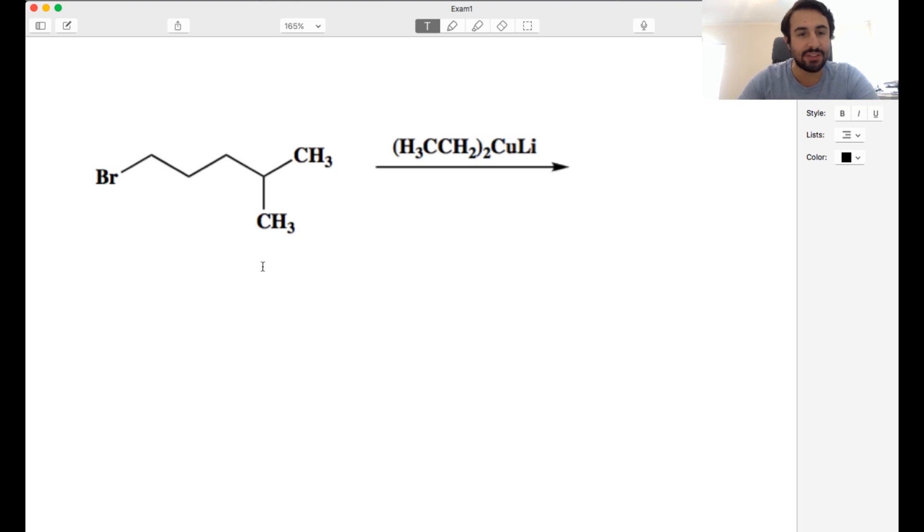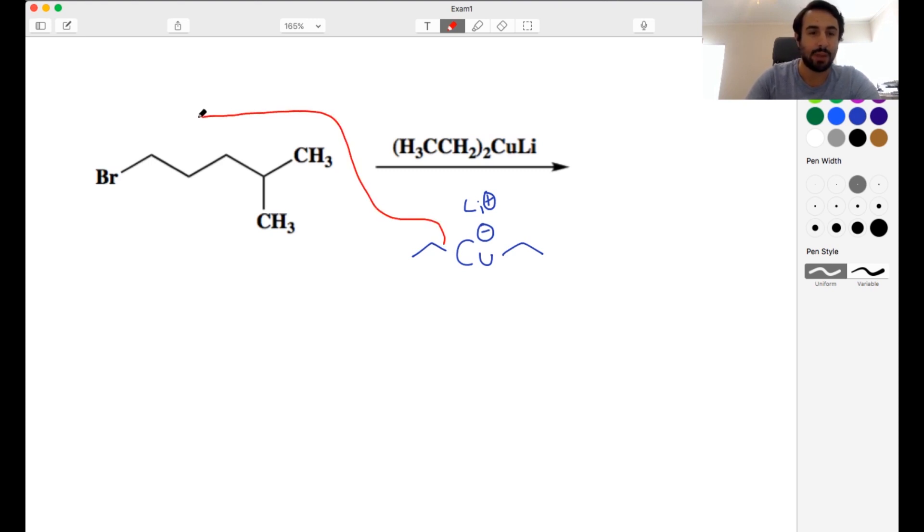So we have this substrate, and we want to know what's going to happen under these conditions. We have this organocuprate, right? We've got two ethyl substituents, and the copper bears a negative charge, and then we've got a lithium counterion. So I do have a tutorial on organocuprates. If this looks unfamiliar, you can go and check that out. But what these do is essentially just deliver an alkyl nucleophile.